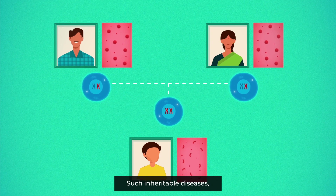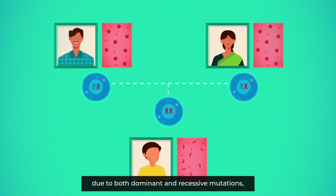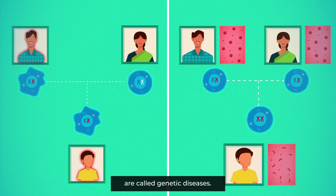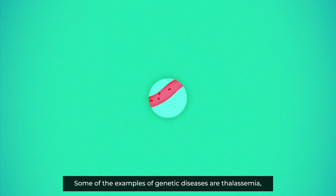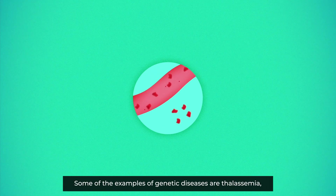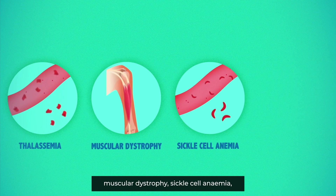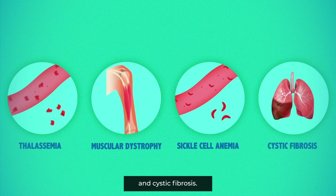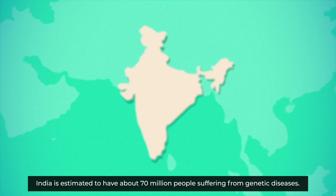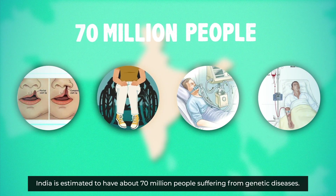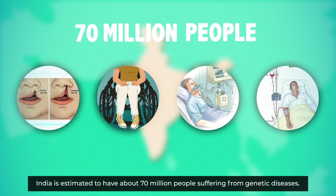But the problem arises when two such people have biological children together — their children can inherit two copies of the mutated gene and suffer from the disease. Such inheritable diseases due to both dominant and recessive mutations are called genetic diseases. Some examples are thalassemia, muscular dystrophy, sickle cell anemia, and cystic fibrosis. India is estimated to have about 70 million people suffering from genetic diseases.